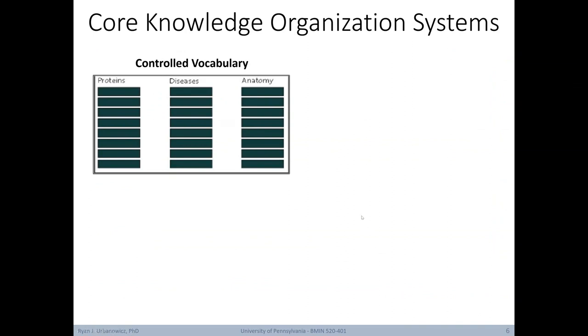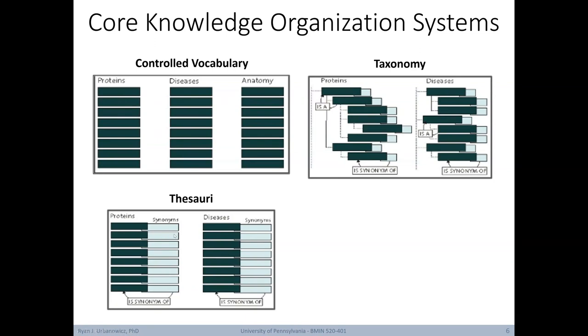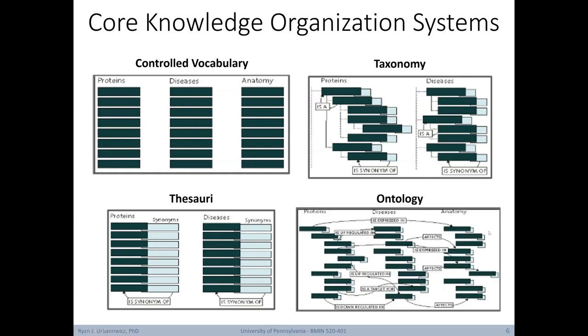Let's take a quick look at some visual representations of some of these knowledge organization systems. Here's a controlled vocabulary, which is basically just a list of controlled terms. A taxonomy brings in a hierarchy of relationships, such as is-a. Thesauri, on the other hand, tend to focus on relationships that describe connections between like or unlike terms. And we can see when it comes to ontologies, a much broader range of relationships can be defined, connecting different objects or terms.